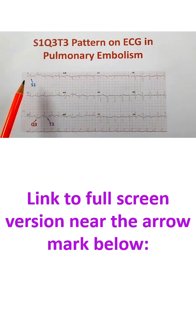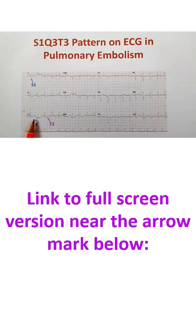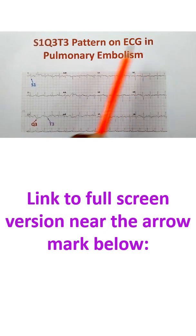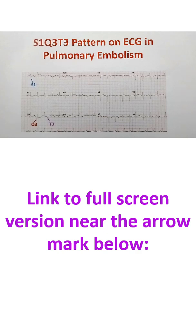S1 — that is S wave in lead 1, Q3 — Q wave in lead 3, and T3 — T inversion in lead 3. That is the S1Q3T3 pattern on ECG in pulmonary embolism. This is very popular and most of us know it from early in our careers because it is taught very often, but please note that this is not the commonest pattern in pulmonary embolism — it is seen sometimes but not always.